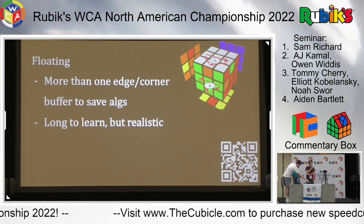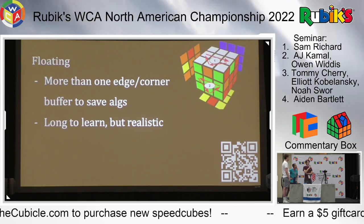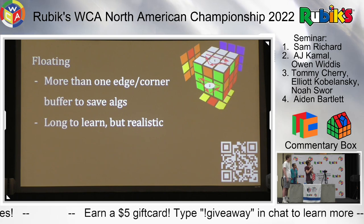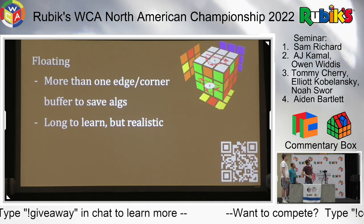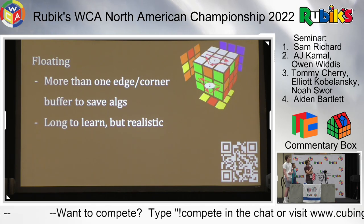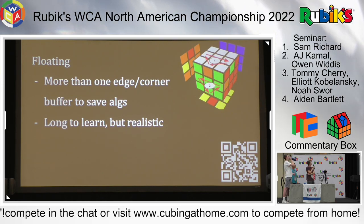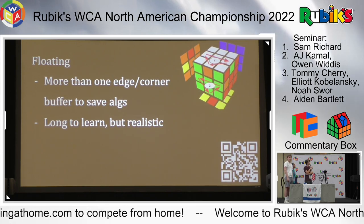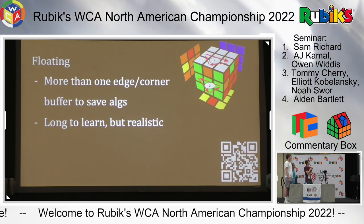Floating uses multiple edge and corner buffers. Normally you learn all three cycles from one specific buffer, but for many scrambles it's better to know three cycles from any given buffer. Looking at the example scramble on screen: normally tracing from a buffer on the top layer, you see it's just a U-perm to solve the top. But once you do that U-perm, the top layer is solved and our buffer is used. Normally you'd choose a random unsolved piece to break into, which adds two extra algorithms to the solve.